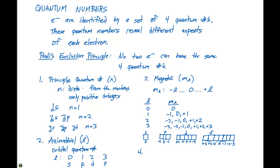We'll get into more examples later with specific elements or atoms, and this should make a bit more sense. The last quantum number is the spin quantum number, abbreviated with a lowercase m sub s. There are two different values: plus one-half for spin up, and minus one-half for spin down. By using this set of quantum numbers, we can set up a system where each electron in a particular atom has only one unique set of four quantum numbers. In the next video, we'll go over some examples of how that's done for specific atoms.